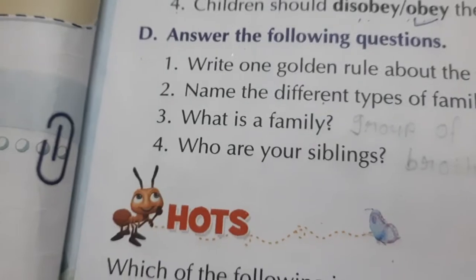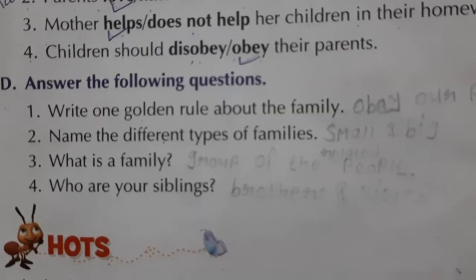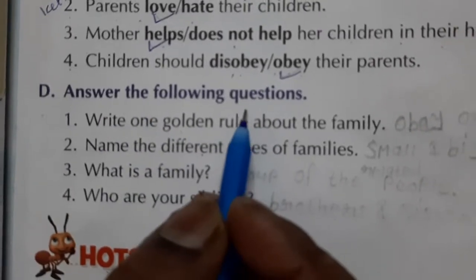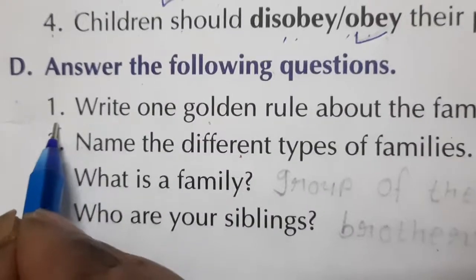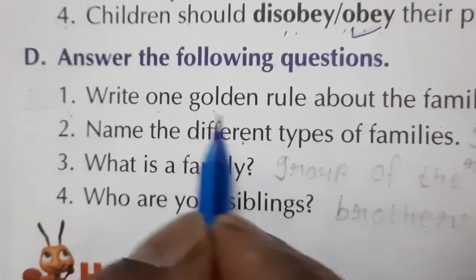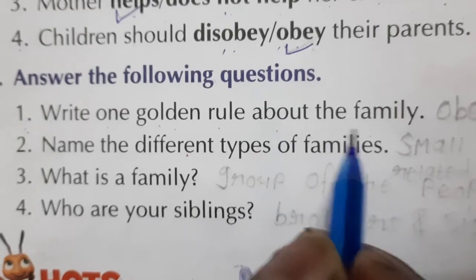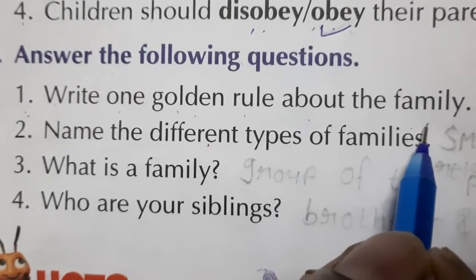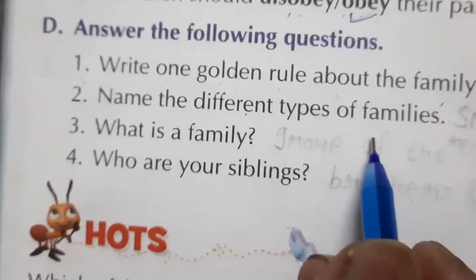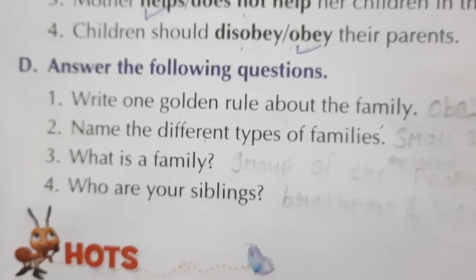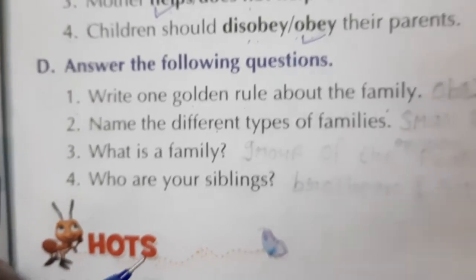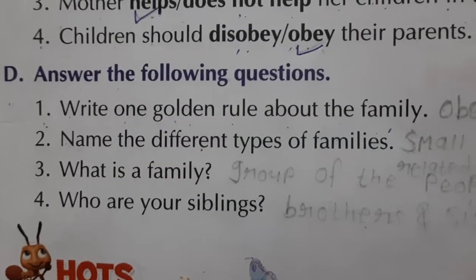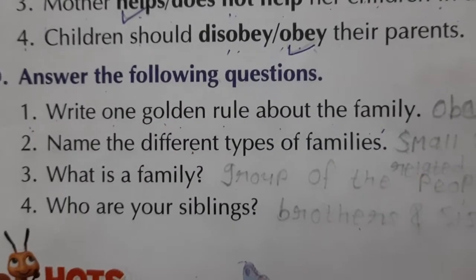Question D: Answer the following questions. Write one golden rule about the family — matlab family ke baare mein ek sunhara niyam batao. So: obey the parents, share your work, respect your elders — yeh sab family ke golden rules hain.